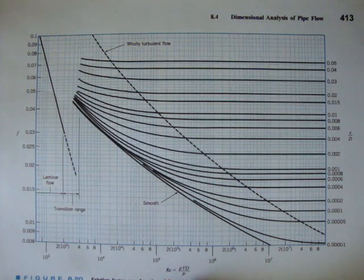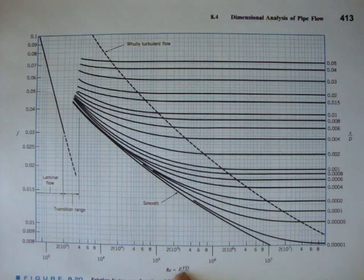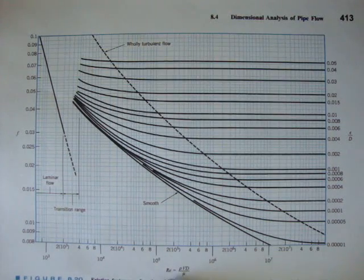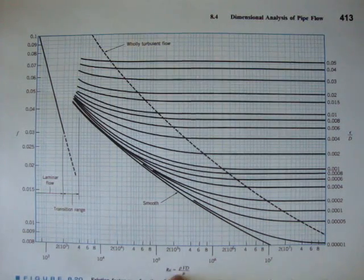Reynolds number is equal to rho times the average velocity times the diameter over mu. And remember, if you have that little index card written down, we have Reynolds number.